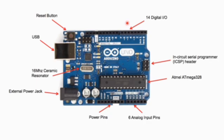Here you can see the In-Circuit Serial Programmable (ICSP) header. Devices which we connect serially are connected through this. The main brain of this Arduino board is the microcontroller chip.